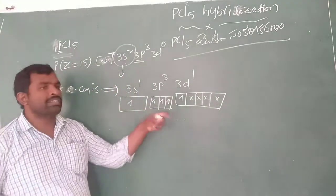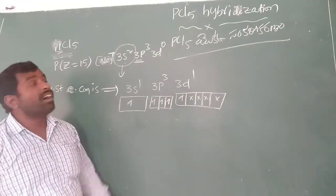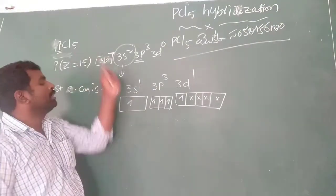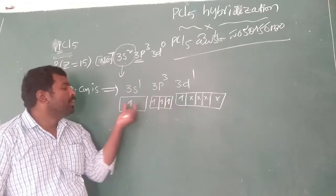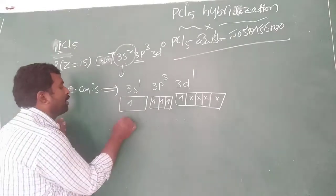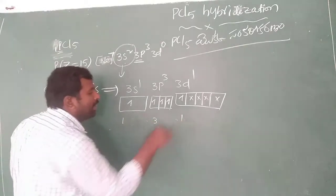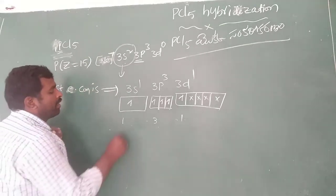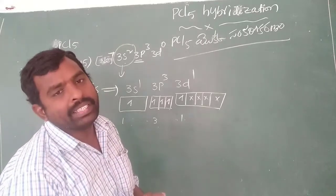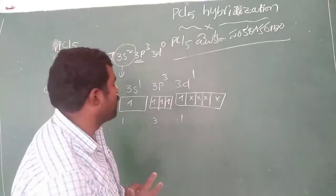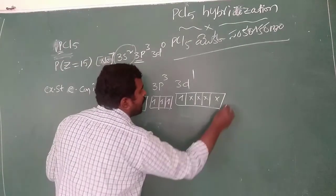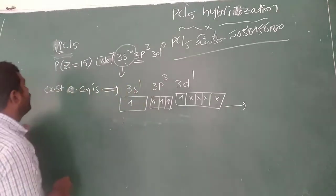These 5 orbitals will be involved in bonding with the 5 chlorine atoms. The hybridization involves 1 s orbital, 3 p orbitals, and 1 d orbital. So the hybridization is sp³d. The PCL5 molecule involves sp³d hybridization.